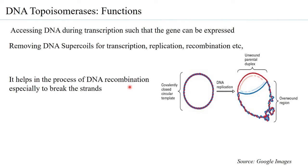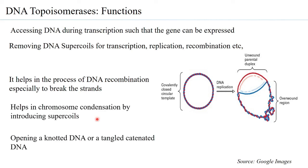DNA topoisomerase also helps in the process of DNA recombination — the exchange of genes through the formation of chiasma in meiosis — by breaking the strands. It helps in chromosome condensation by introducing supercoils to make the DNA more compact. It can also open a knotted DNA or untangle a tangled DNA. These are some of the functions that DNA topoisomerases carry out all the time.